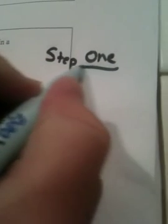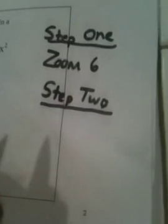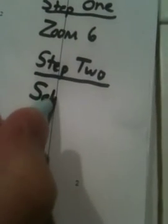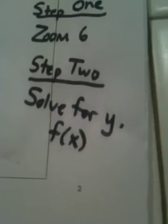Step one is always zoom six, and then step two, we have to solve for y. And sometimes realize y can be called f of x, they mean the same thing. Okay, so let's look at the first one.